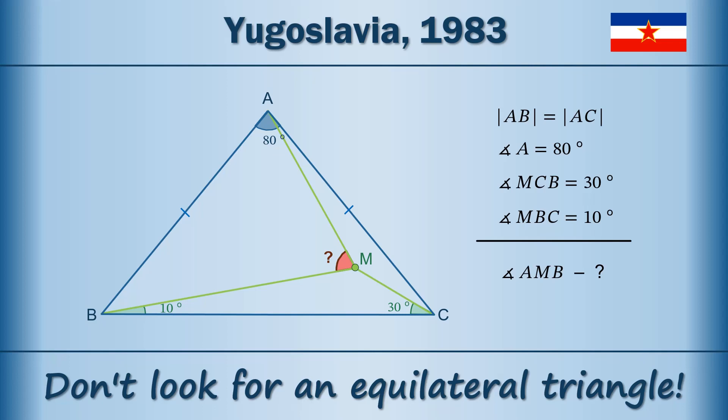Given an isosceles triangle ABC with apex angle A equal to 80 degrees. Point M is taken inside the triangle so that point M with the base BC forms a triangle with angles 10 degrees and 30 degrees at vertices B and C respectively. It is required to find the value of angle AMB.